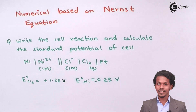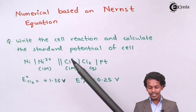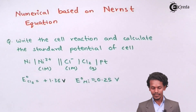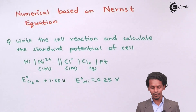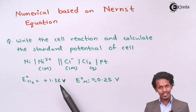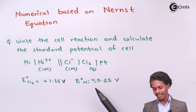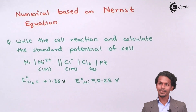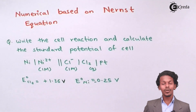The question on your screen says: write the cell reaction and calculate the standard potential of the cell. The cell is given, and the standard EMF of chlorine, E° (Cl₂), is given as +1.36 V, while the standard cell potential E° of Ni is given as −0.25 V. We have to calculate the standard potential of the cell.